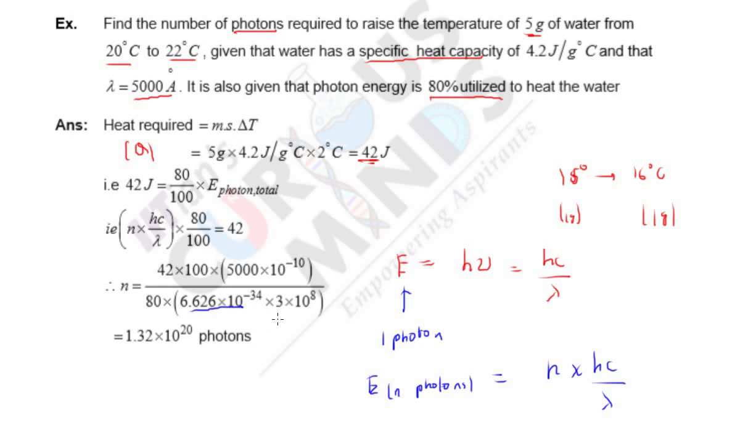C is 3 times 10 to the 8, lambda is given. Converting everything to standard units, so angstrom to meters. On solving this, you get the answer as 1.32 times 10 to the 20.